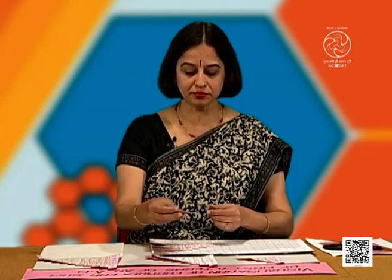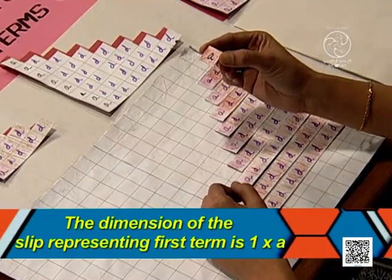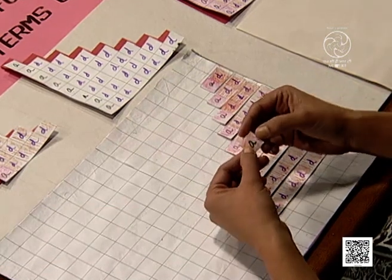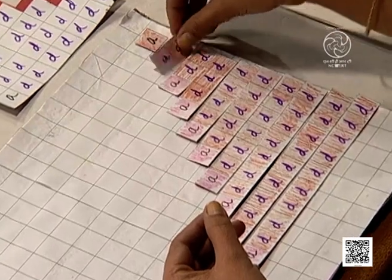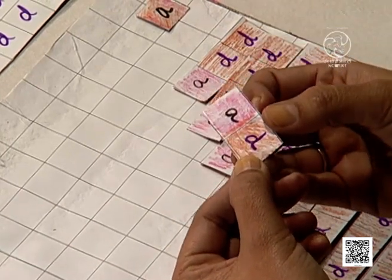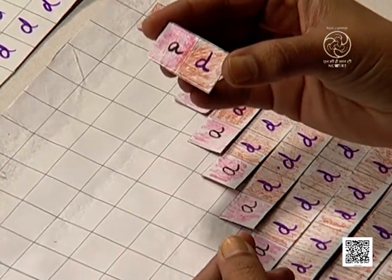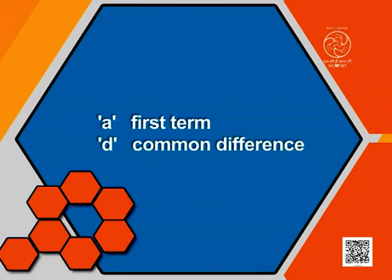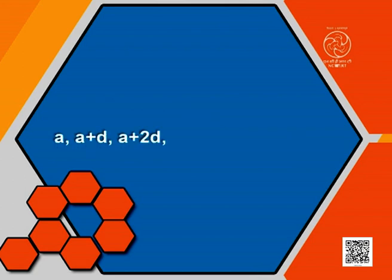Let us do certain preparations. We have prepared a slip representing A, which is the first term of the sequence. This slip is representing A plus D, where A is the first term and D is the common difference. If we take an arithmetic progression with first term A and common difference D, it can be written as A, A plus D, A plus 2D, A plus 3D, and so on up to A plus N minus 1 into D.